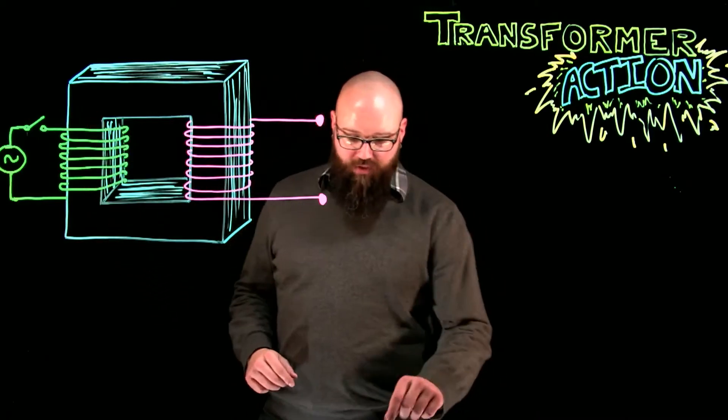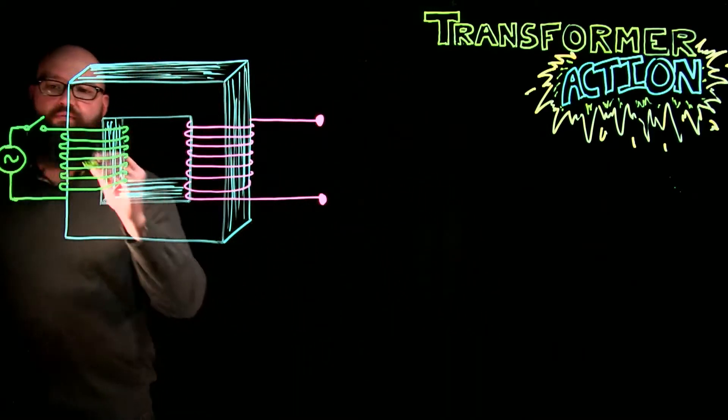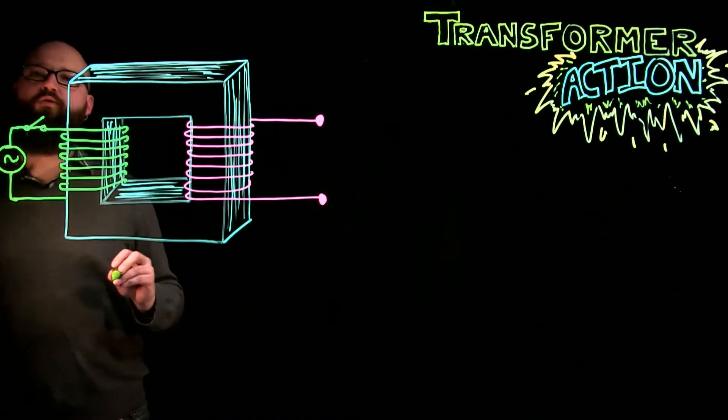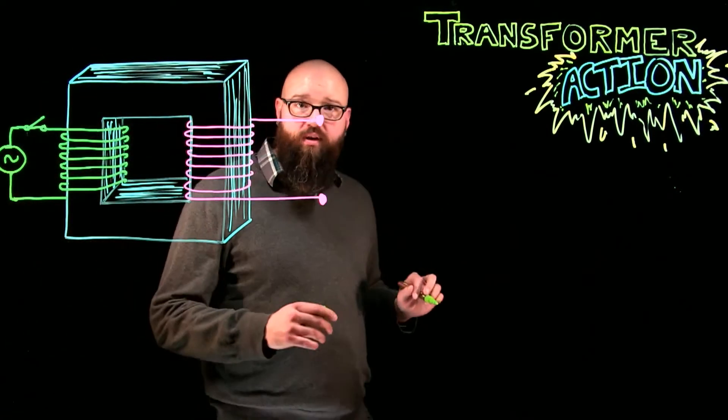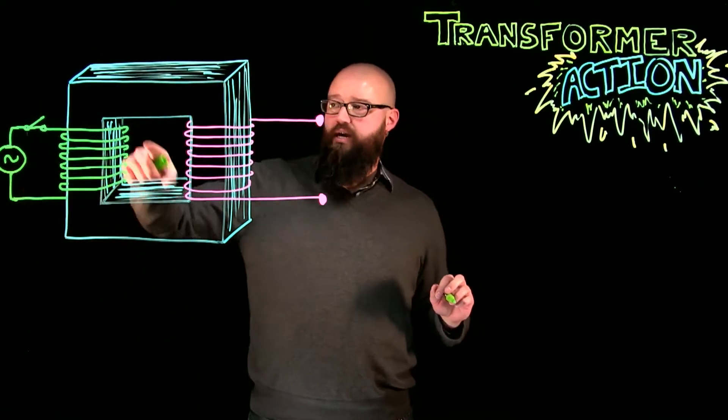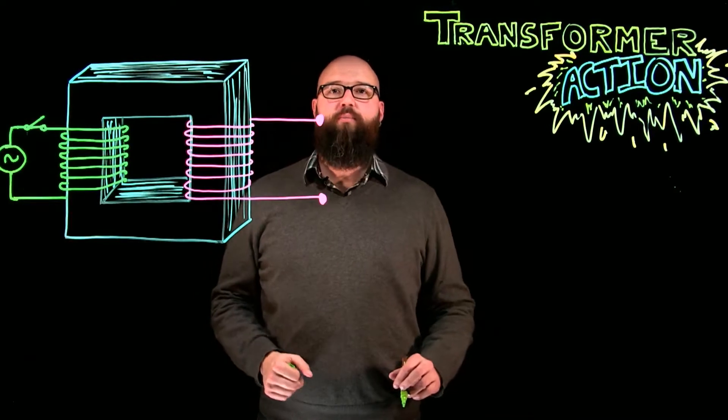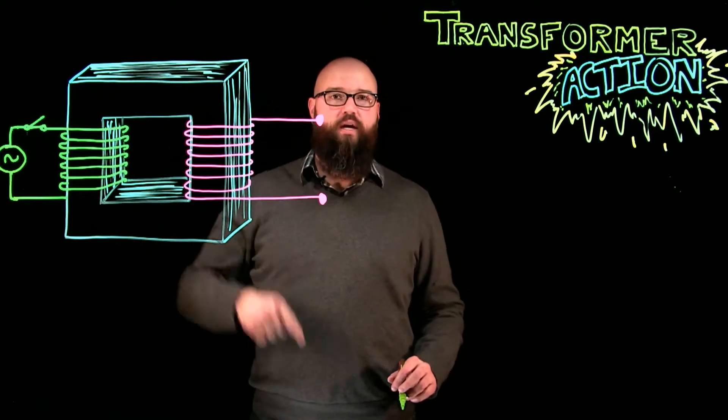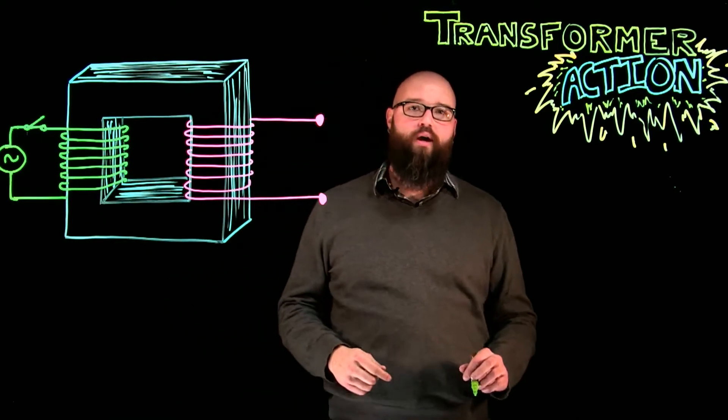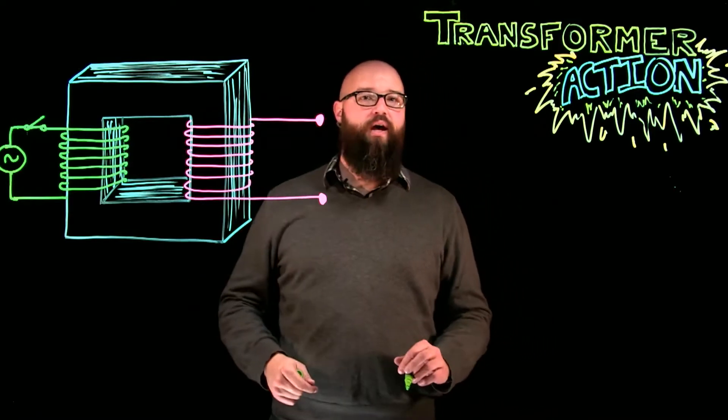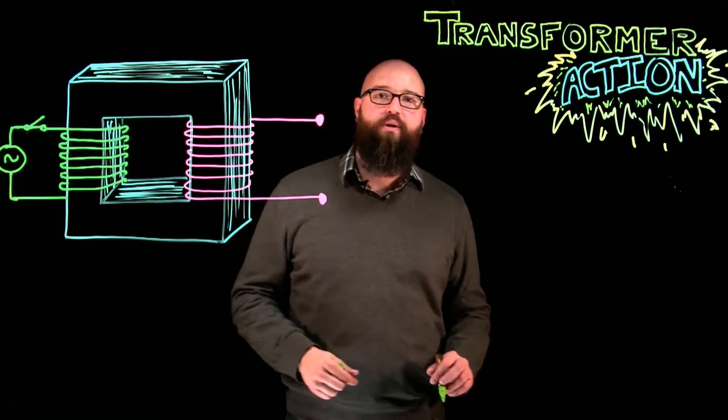Right now we have an open switch. First thing we're going to do, we're going to close that switch. Now, if you take a look at this primary side of our transformer right now, we have a closed circuit, and really it's just a coil of wire, which if it was a DC value applied,